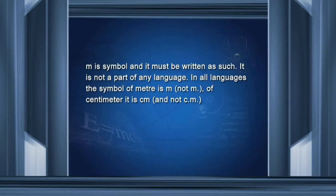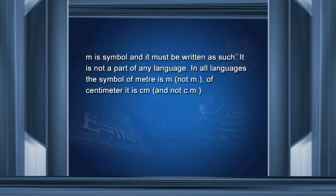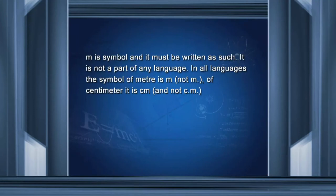I would like to draw your attention to the symbols column. M, for example, is a symbol — it is not part of any language and must be written as such. Distance must be expressed in m. In some places, people write meter in their own language — for example, some states in Hindi would write it as 'me'. That is not acceptable. For scientific purposes, distance must be expressed in m. In all languages, the symbol of meter is m — not even 'm dot'. The symbol of centimeter is cm, not 'c dot m dot'.